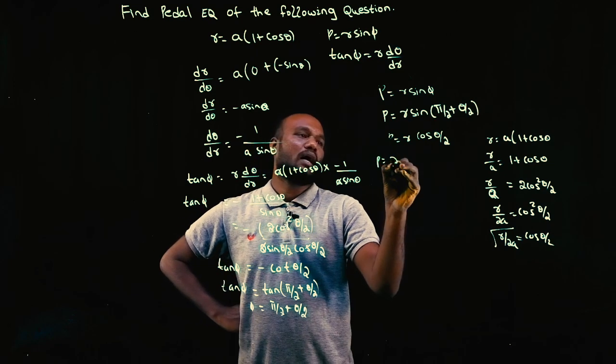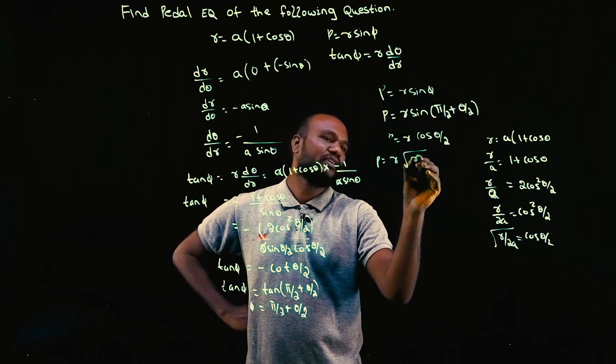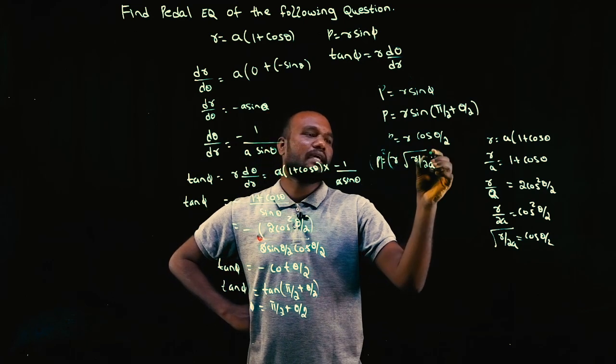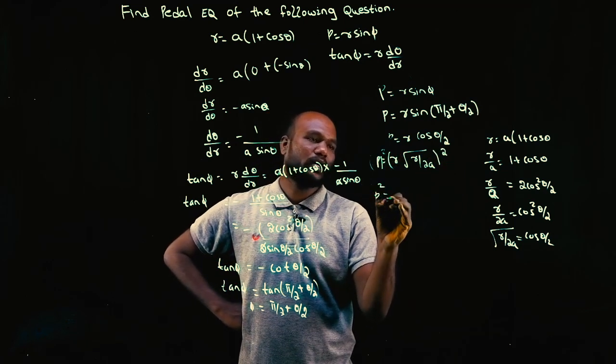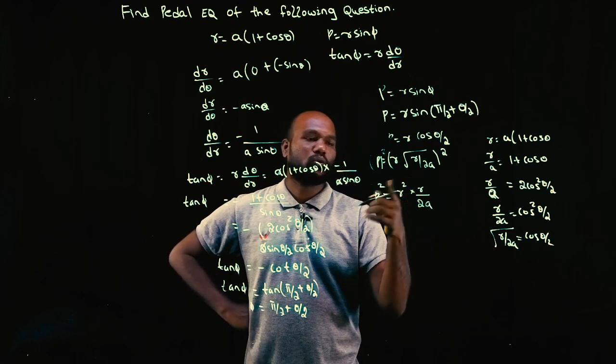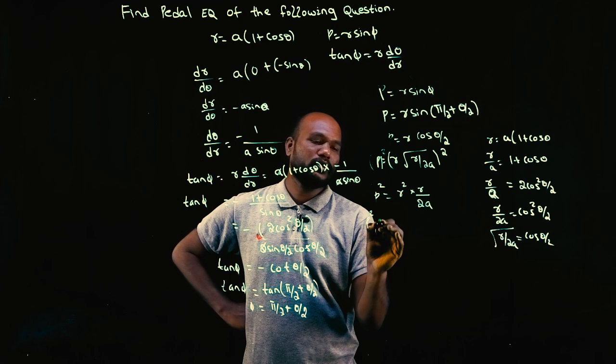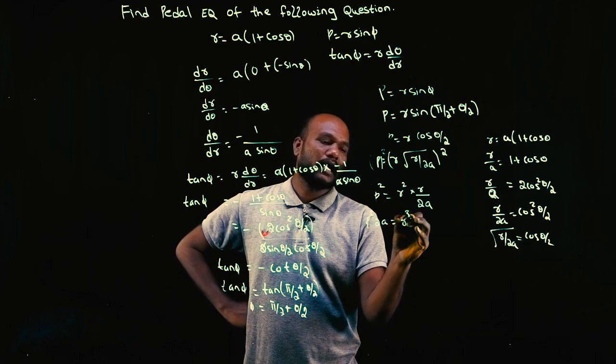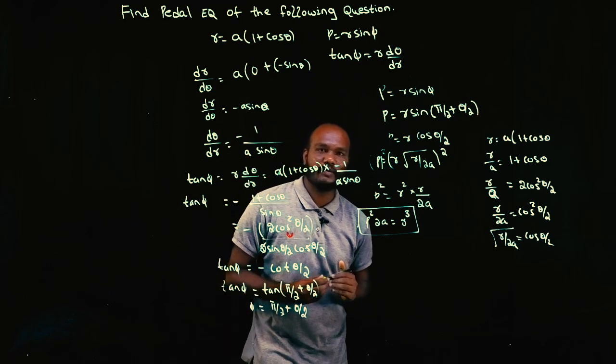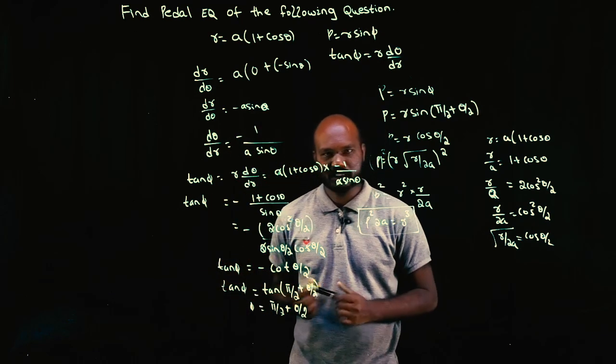So P is equal to R into root of R by 2A. To make it prettier, just square on both sides. So P square equal to R square into R by 2A. So 2A P square is equal to R cube. This is the pedal equation for the following question.